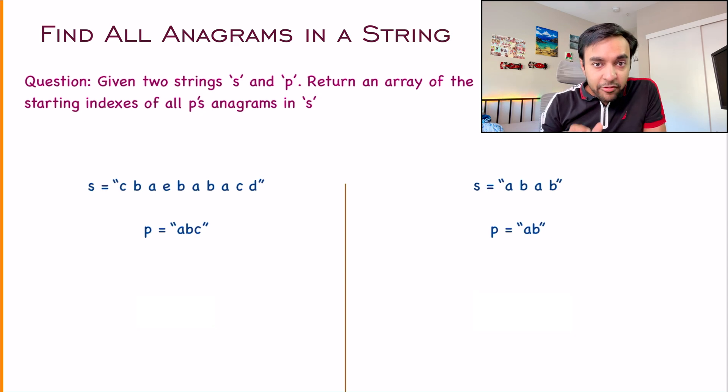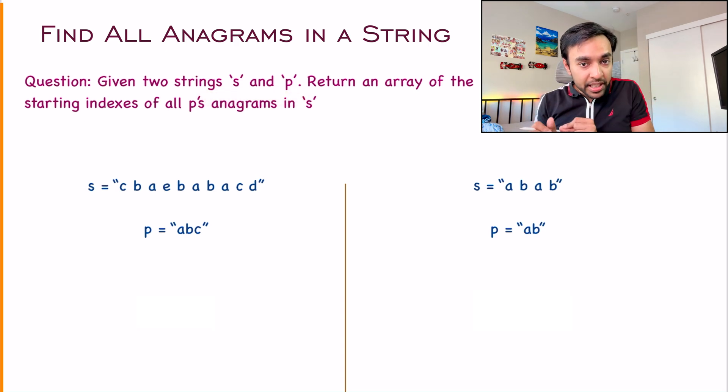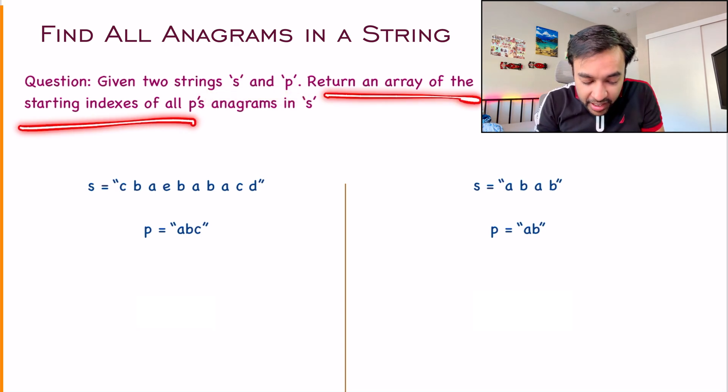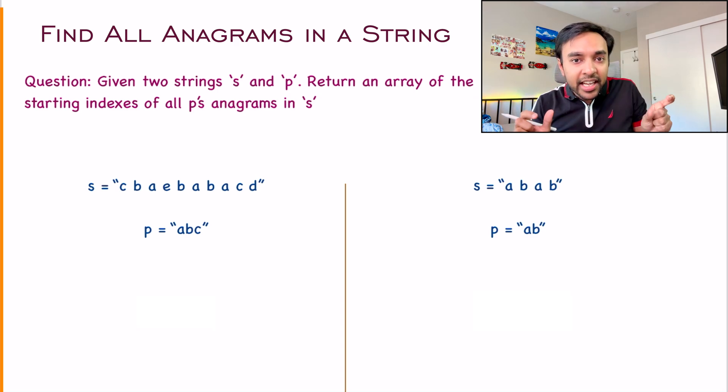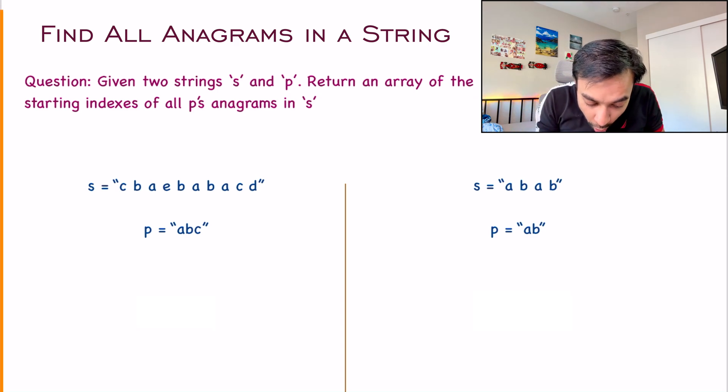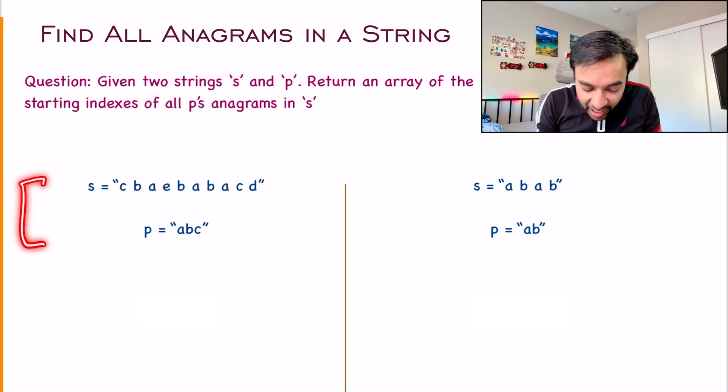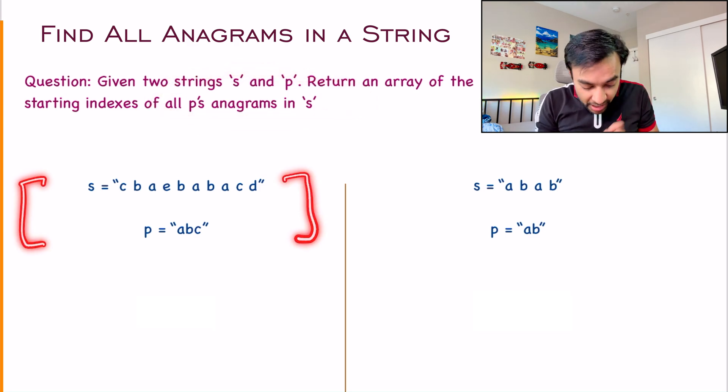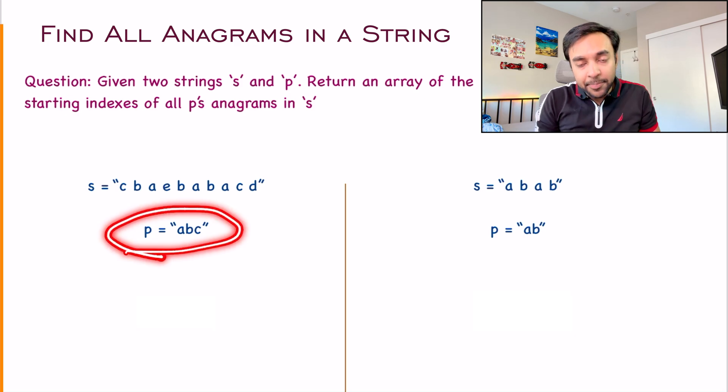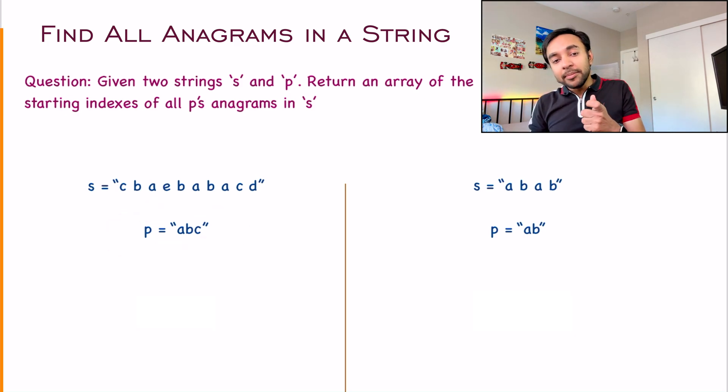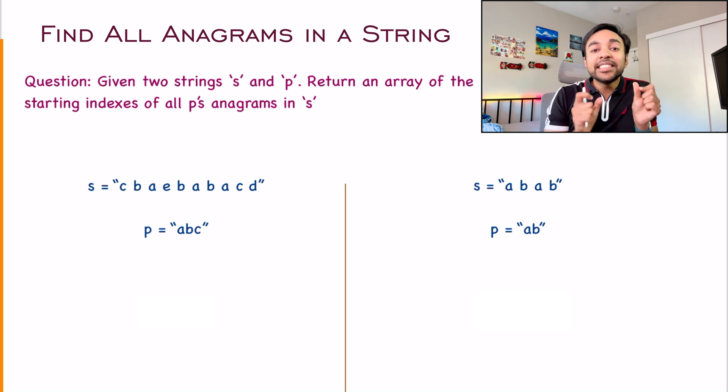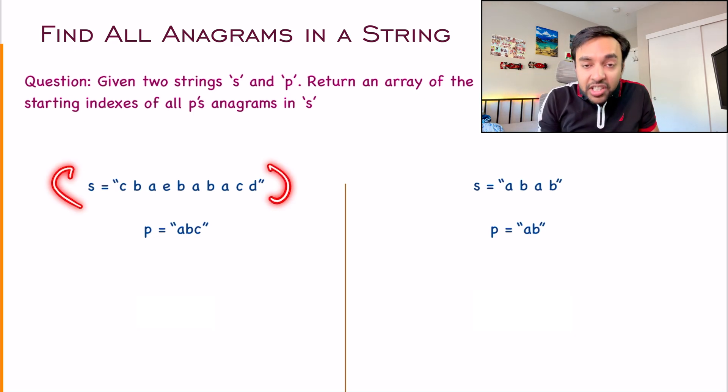Let us first make sure that we are understanding the problem statement correctly. In this problem, you are given two strings S and P and you have to return me the array of starting indexes of all of the P's anagrams that are in S. For example, I have my first test case over here. If you look at this string P, you have to tell me at what index do I start and then I will find these anagrams in my original string S.